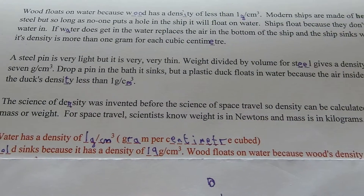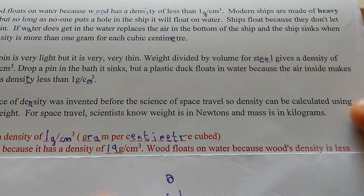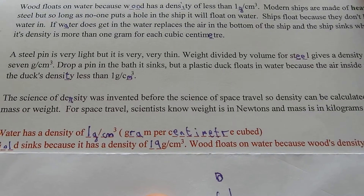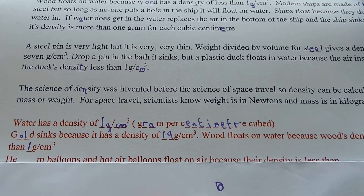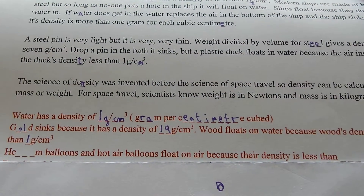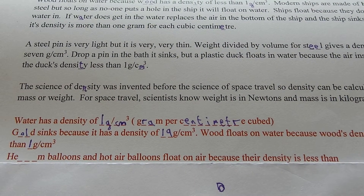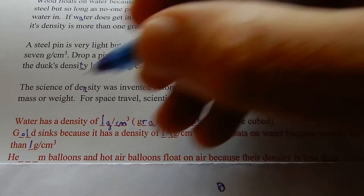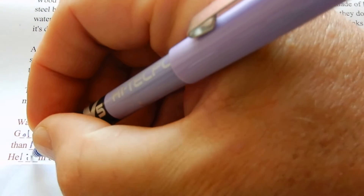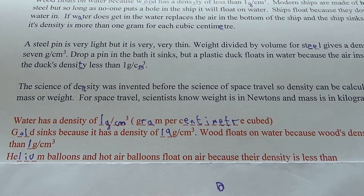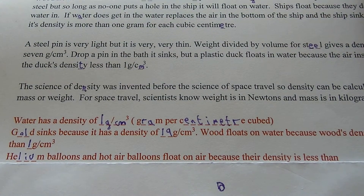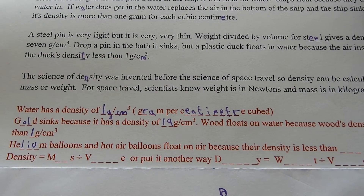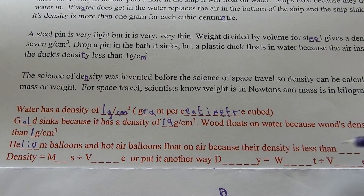Wood floats because wood's density is less than the magic number 1 gram per centimeter cubed — anything less than 1 floats on water. Helium balloons and hot air balloons float on air because their density is less than air.